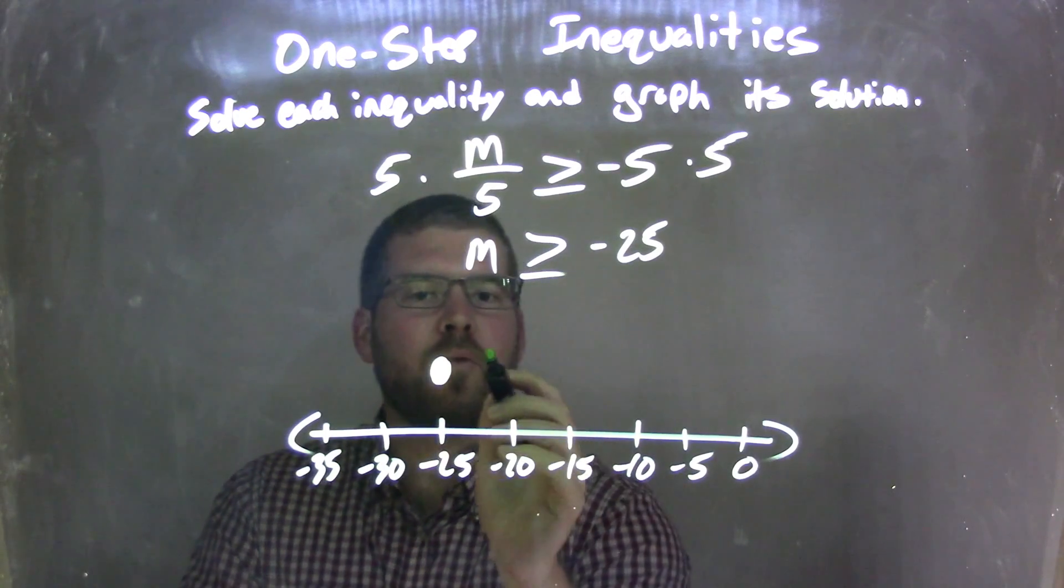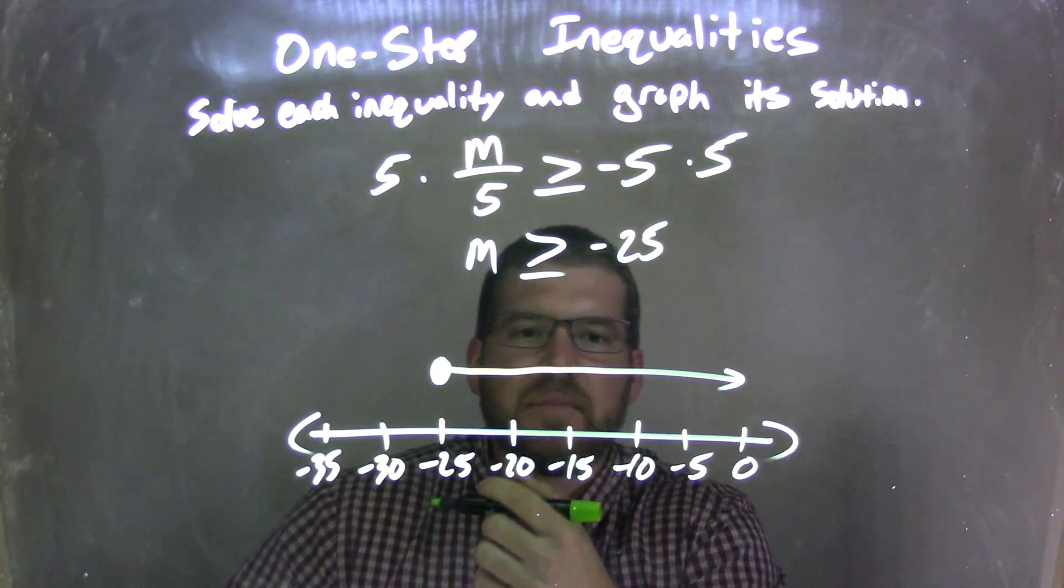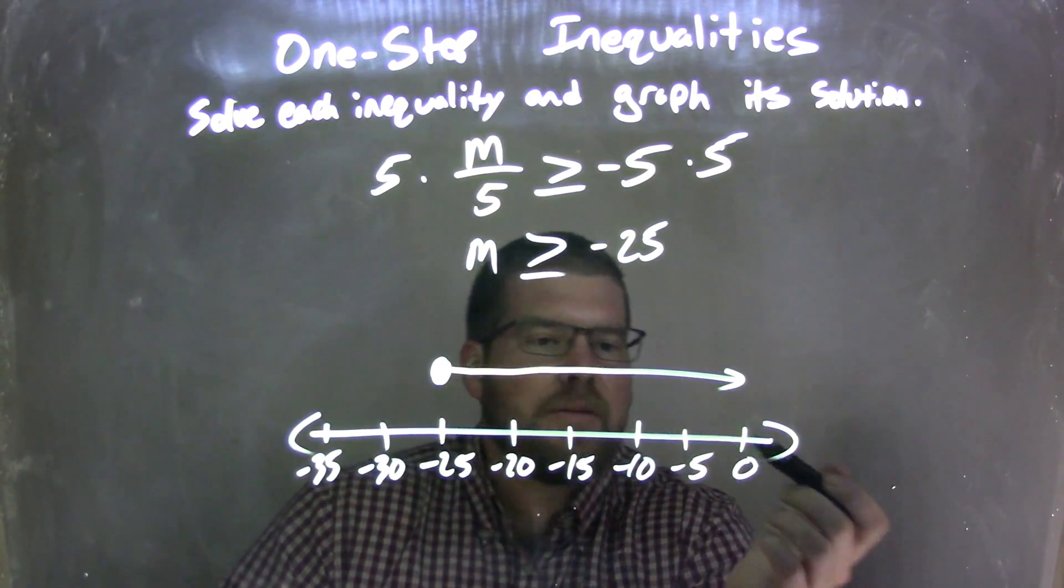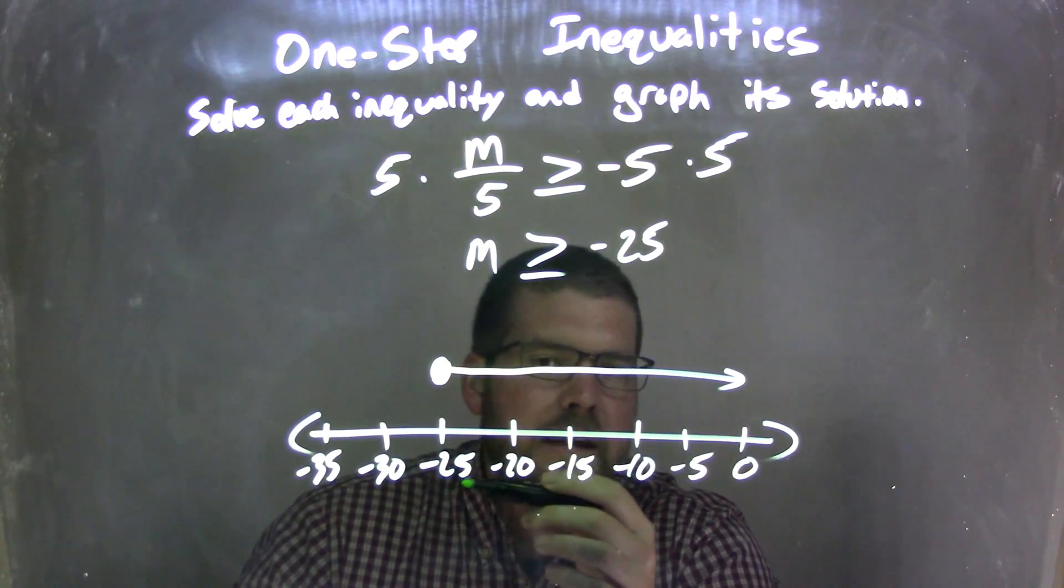So if m is greater than that as well, we need to make our arrow go to the right, to the greater than side. Because reality, think about this, negative 10 is greater than negative 25.